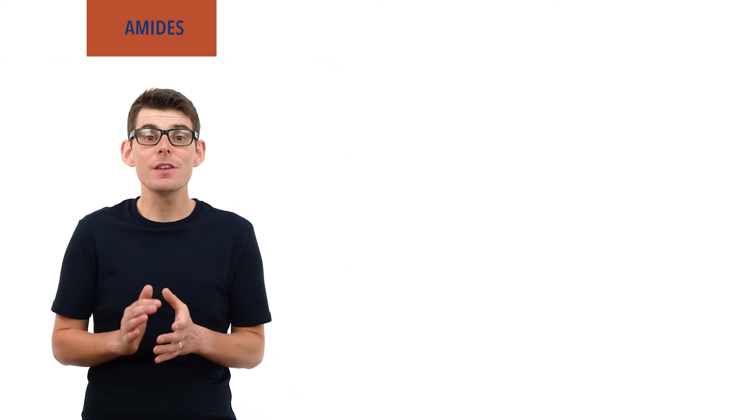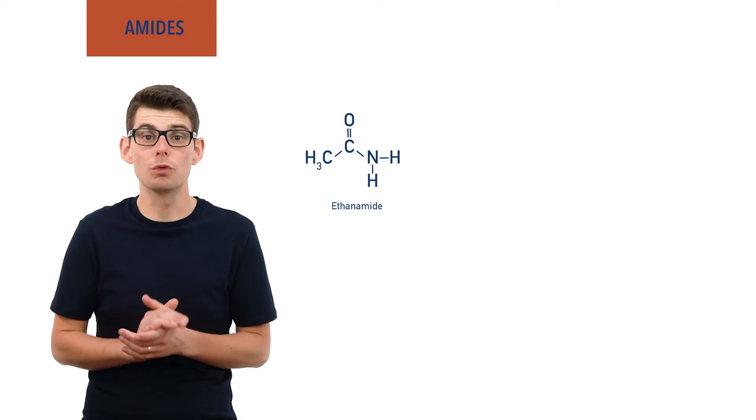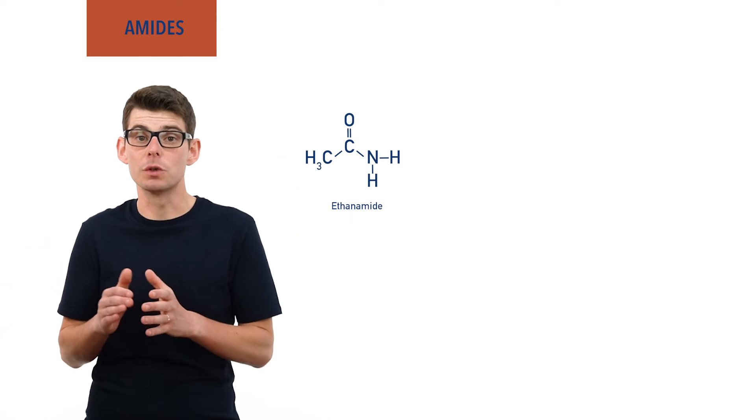For example, ethanamide is a primary amide that has an NH2 group with no other carbon groups bonded to the nitrogen.